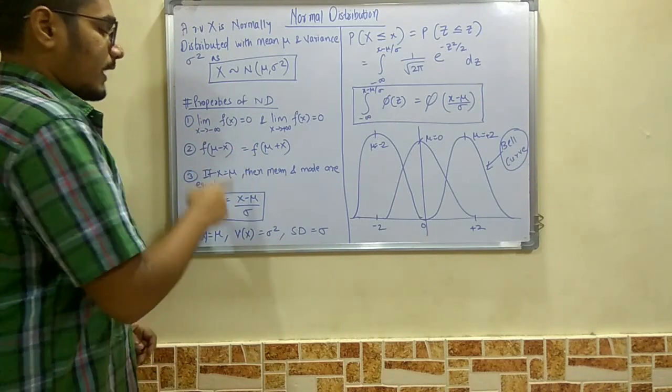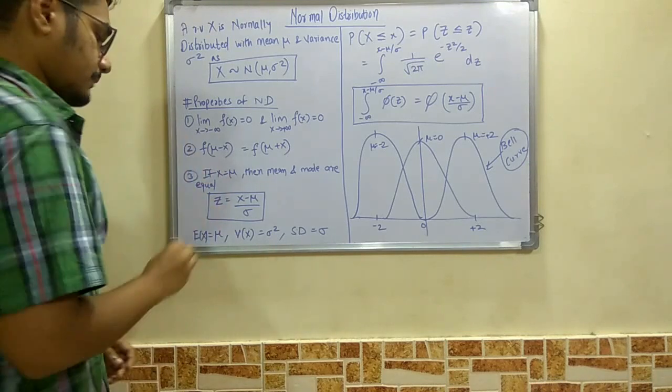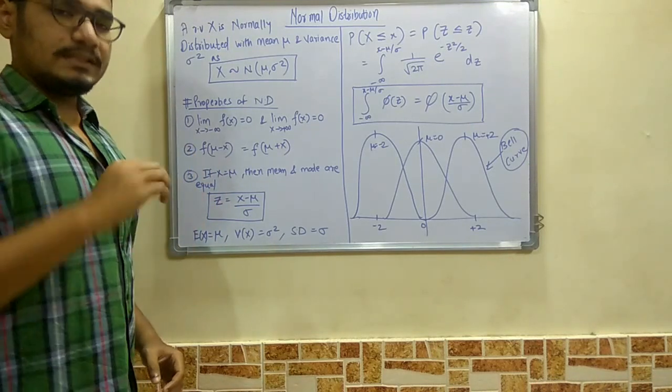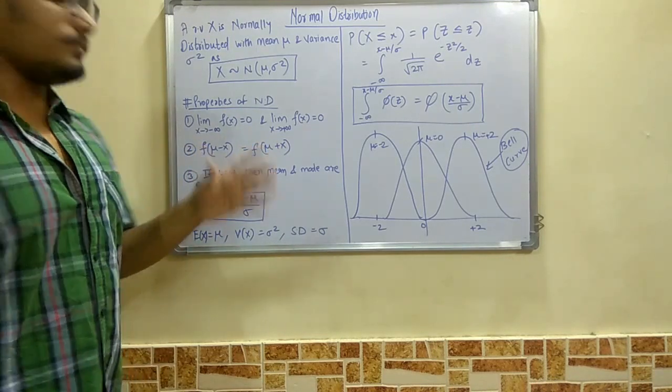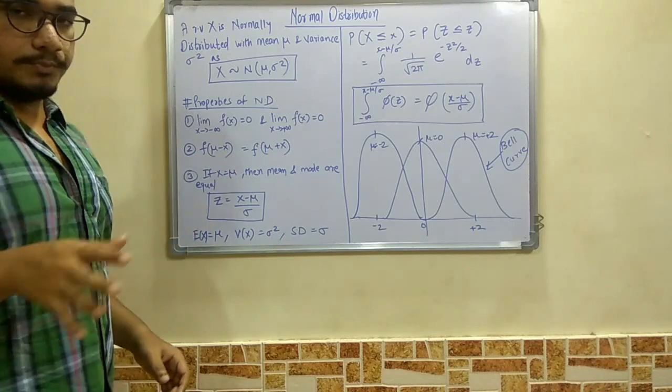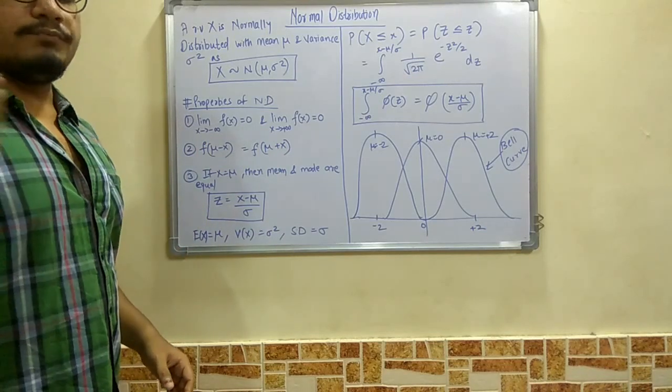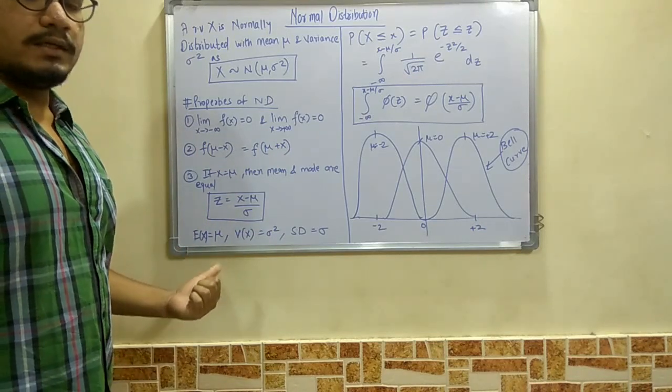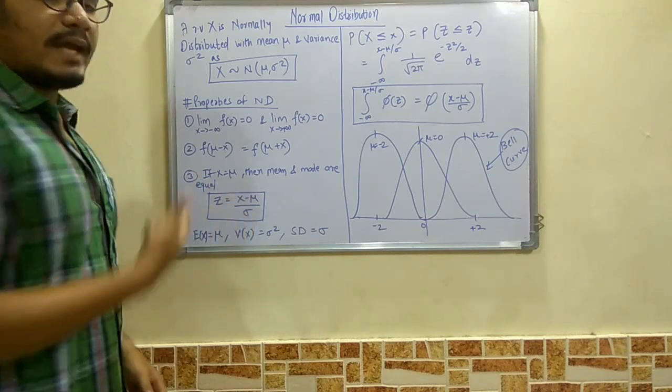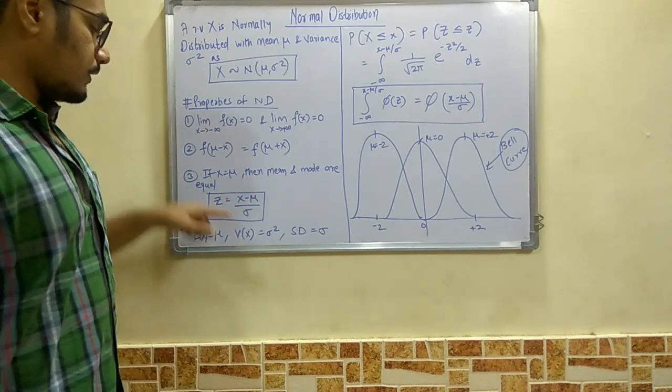We have these three parameters defined for normal distribution: E(X) = μ, which is the mean; V(X) = σ², which is the variance; and the standard deviation, which is the square root of V(X), that is σ.